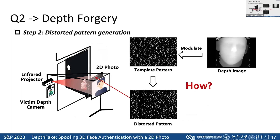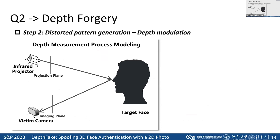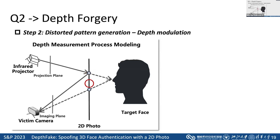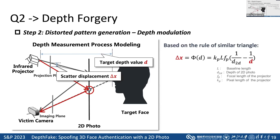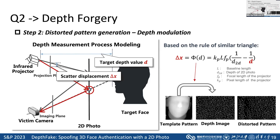To determine how to modulate, we first model the depth measurement process. The projector projects an infrared scatter to the target face and receives the echo. When we use a 2D photo to reflect the infrared, the path of the infrared changes. So to simulate the original echo, we need to project the scatter point from one position to another. Based on the rule of similar triangles, we derive the relationship between target depth and scatter displacement. Then we expand the modulation method to the entire image and get the desired distorted pattern, which can fool the depth camera to generate a fake 3D face.